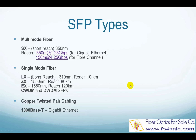Traditional SFP modules support speeds up to 4.25 gigabit per second. An enhanced version, called SFP Plus, supports up to 10 gigabit per second. SFP Plus is becoming more popular on 10 Gigabit Ethernet and 8 Gigabit Fiber Channel.